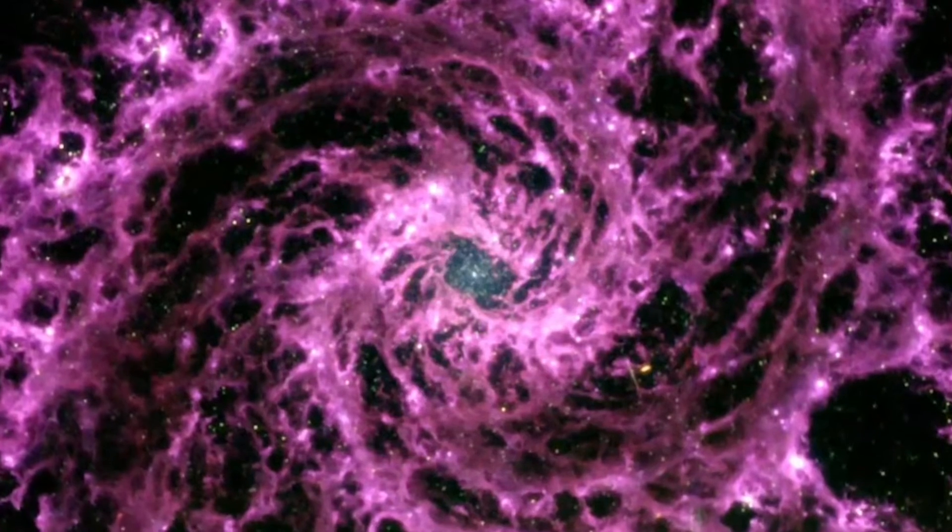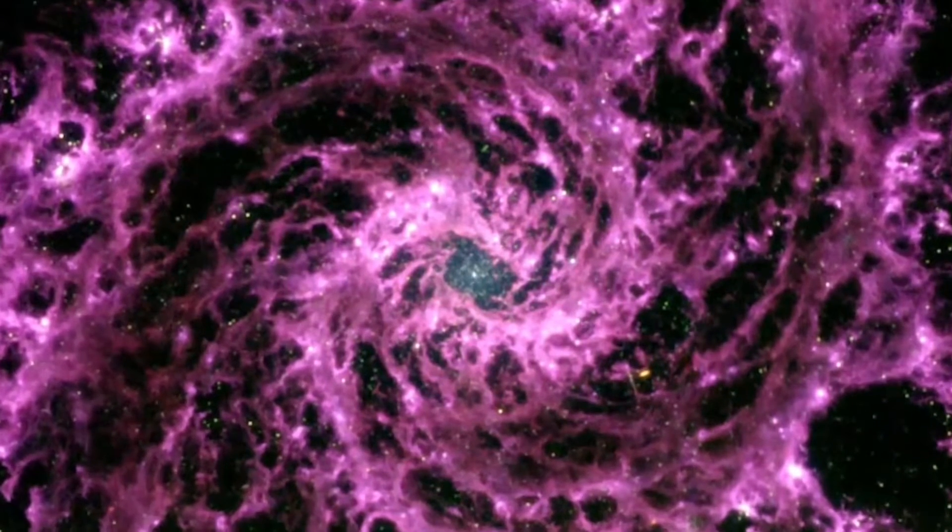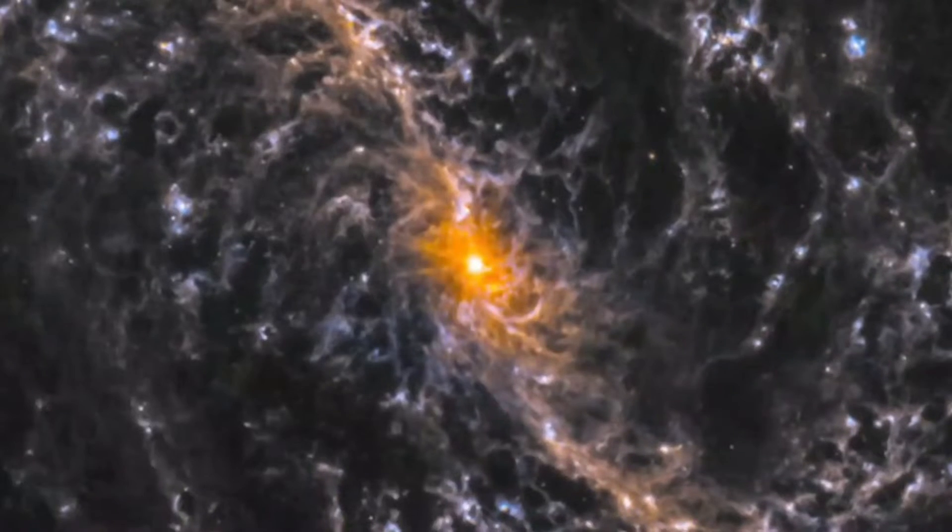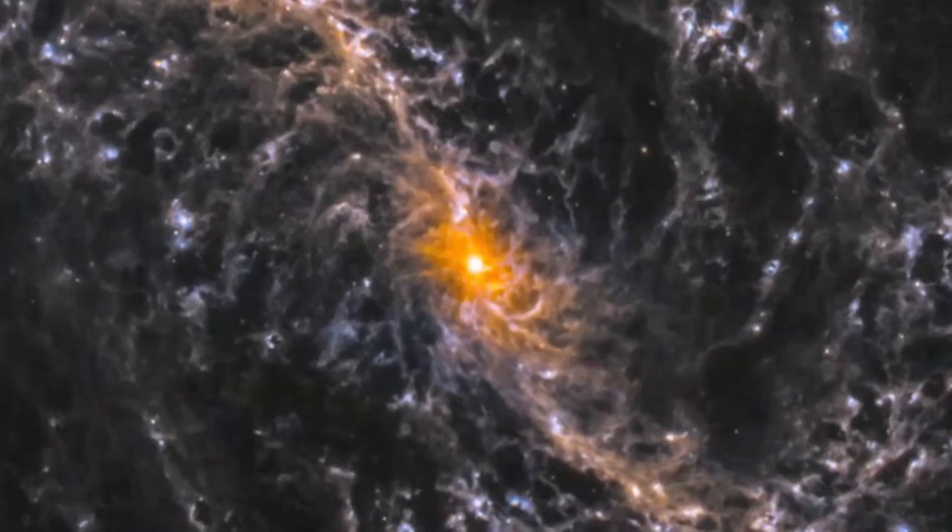Early star-forming areas had previously been covered in darkness. Hubble's instruments were unable to penetrate the heavy dust and gas that surrounded these regions.